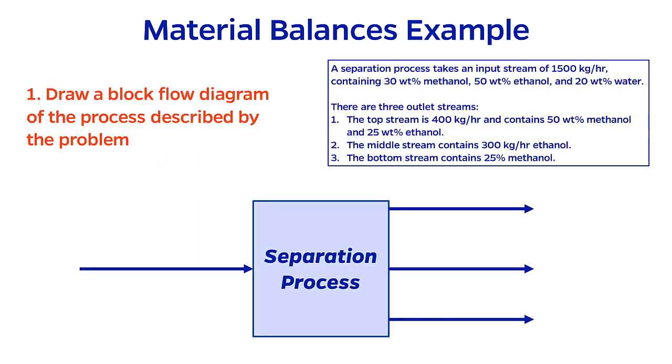Our task is to find the flow rate and composition of the bottom stream. So let's get started by drawing that block flow diagram. Notice that there's a lot of information that's listed here in words, and for me at least it's hard to make sense of it without putting it into a picture. So my block flow diagram contains a box, which is a separation process, and then one input stream, as the problem says, and three output streams.